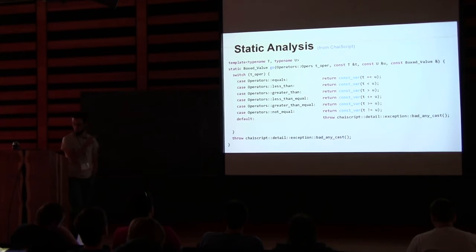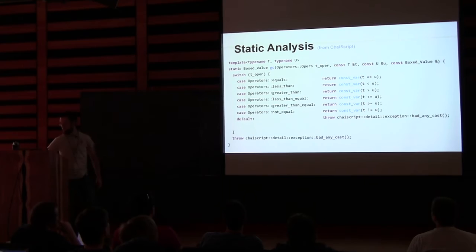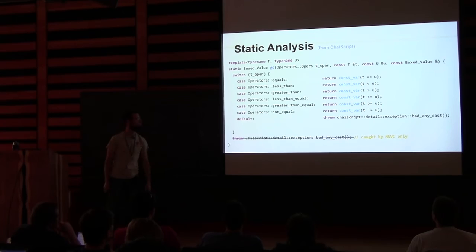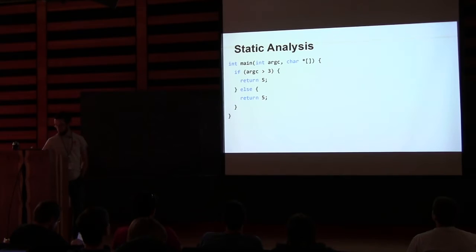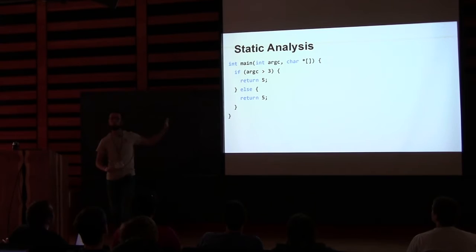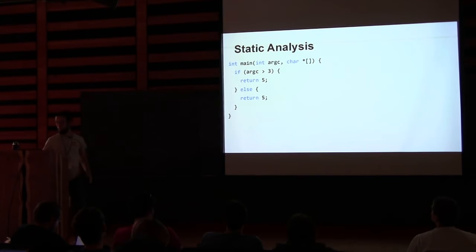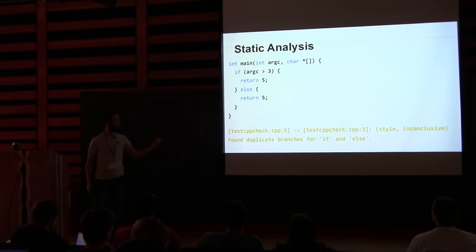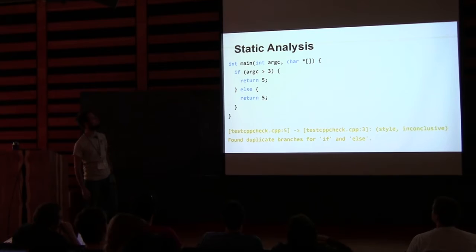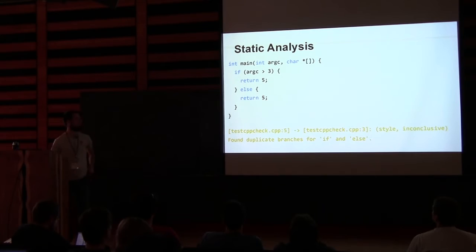This example has some useless code in it. The throw at the end is pointless. Interestingly, only Visual Studio Static Analyzer caught that. This is an obviously contrived example, but I've seen code similar to it after some refactoring, where you accidentally have the if and the else block do exactly the same thing because you changed some stuff around — it definitely happens. CppCheck, another tool that wasn't on the last slide — it's cross-platform and free — is able to tell you that you have duplicate branches for your if and else block.